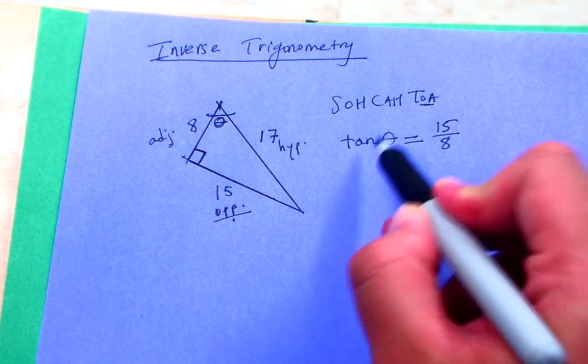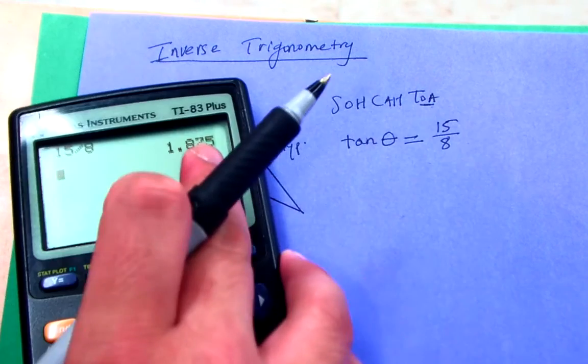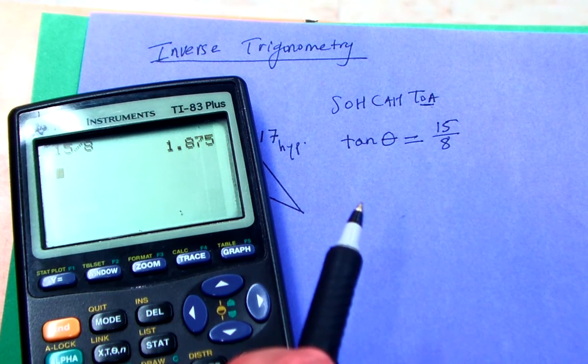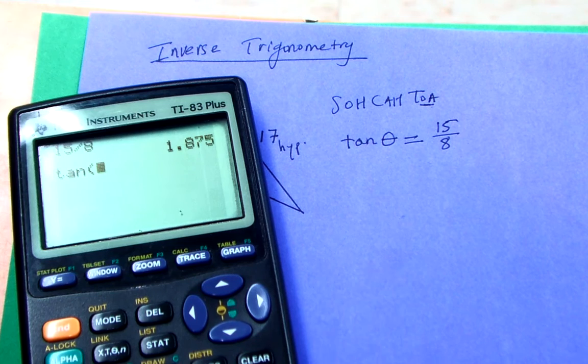So if you recall, what this is actually doing when you type in a number for tangent or sine or cosine, the calculator is essentially looking up a value in a predetermined table, more or less.